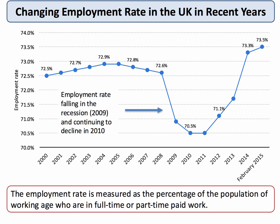In other words, it takes a little bit of time to start recovering — for businesses to be sufficiently confident to start to take on more people. Since then the employment rate in the UK has been increasing. Indeed in 2015 it rose above 73% and is now at its highest level for many years. This is a sign that cyclical unemployment in the UK has been falling.